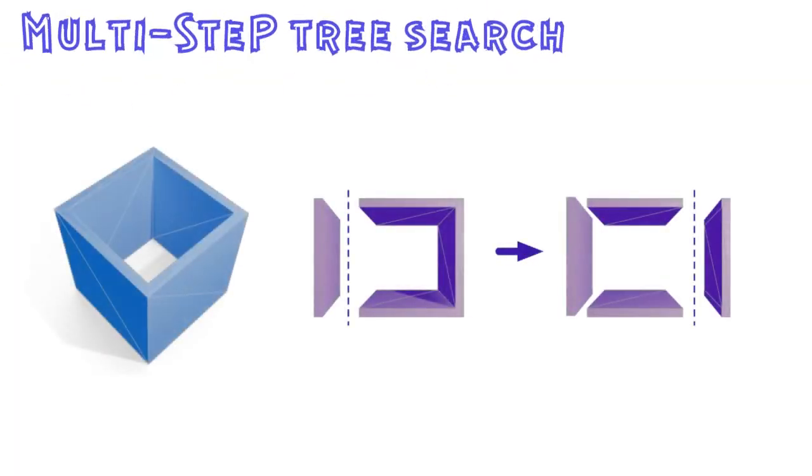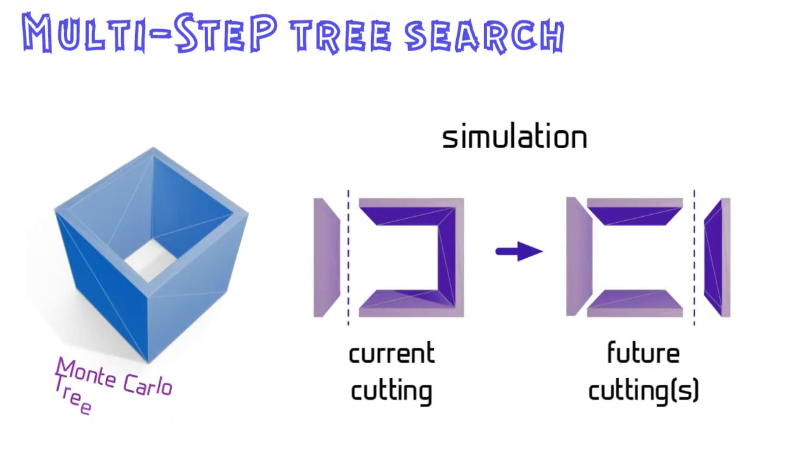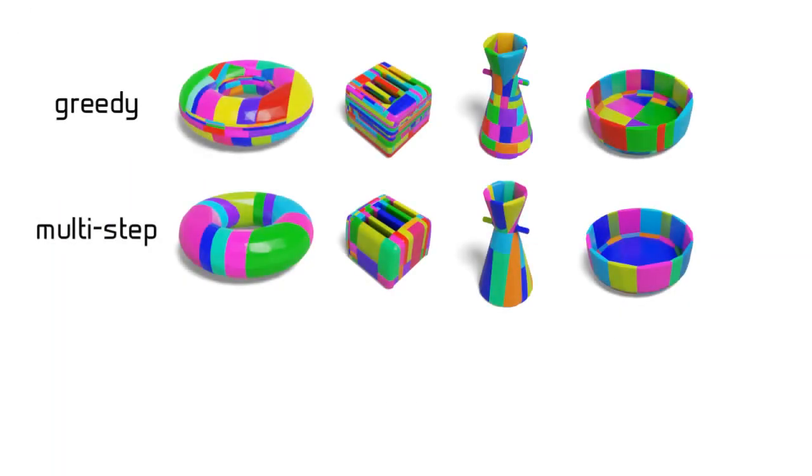Therefore, we propose to utilize the multi-step tree search to determine the cutting planes, which simulates and searches multiple future actions before each cutting action. Unlike the one-step greedy strategy, our multi-step tree search can find the proper first cutting plane by simulating and searching for future cuttings. It leads to the globally optimal solution.